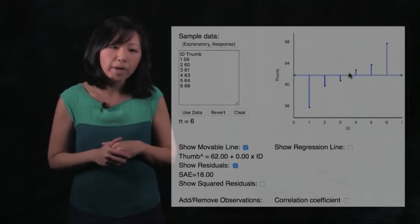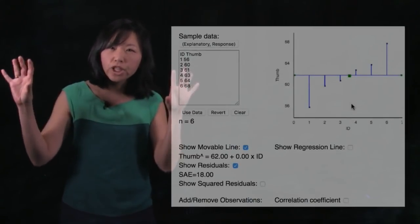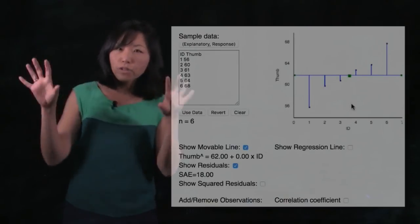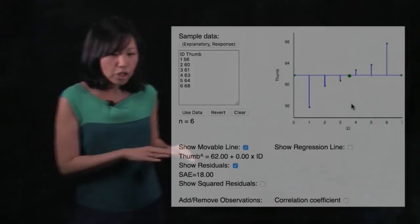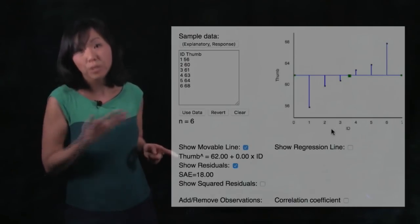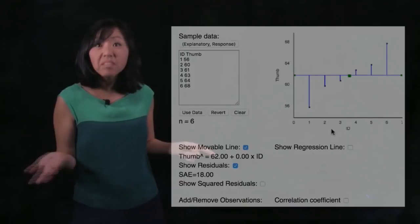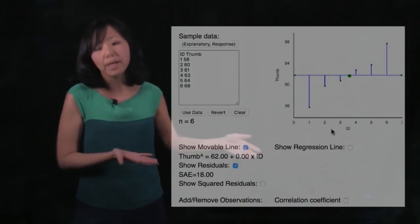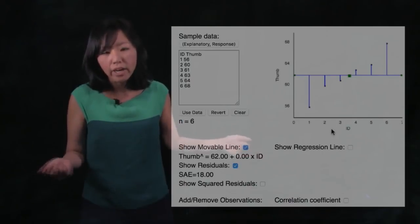And here I want to point out one thing. Remember we've been writing these little word equations and then we started writing little general linear model equations. And I want to show you that right here. This is like our general linear model equation. This is thumb, that's what we're trying to predict. Thumb length equals, and in this case the mean, 62, plus some other stuff. You don't have to worry about that other stuff right now, but we'll leave it in there.